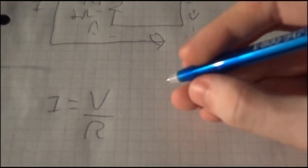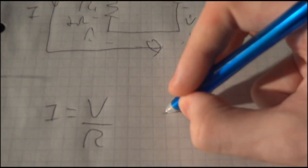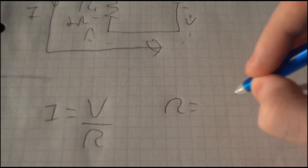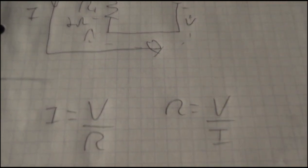Now say you wanted to look for the resistance of this resistor. If we knew the voltage and the current, we could rewrite it to look for the resistance, in which case it would be V over I, the voltage over the current.